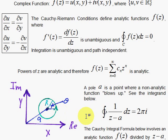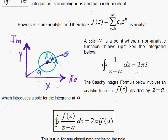So when z equals a, even though this becomes undefined, we can dance around that pole and do this integral and get 2πi.